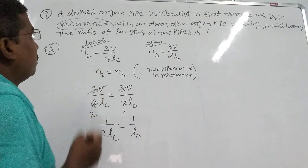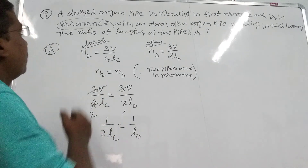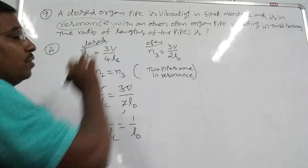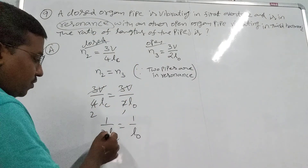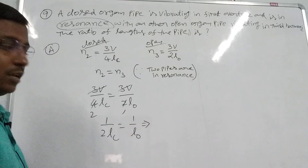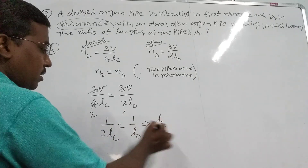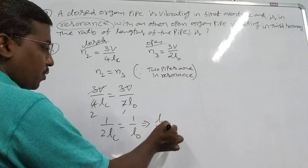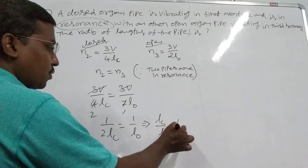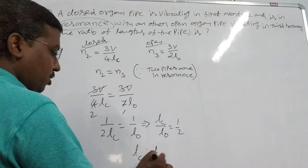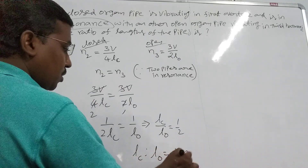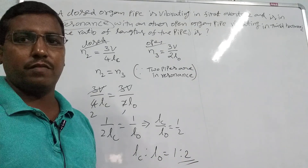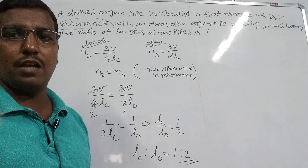They wanted the ratio of lengths, that is closed pipe to open pipe. This implies L_c by L_0 equals 1 by 2, so the ratio L_c to L_0 equals 1 is to 2. This is the answer to the problem.